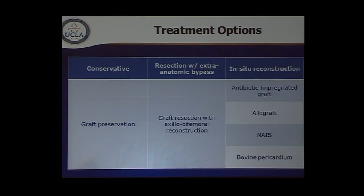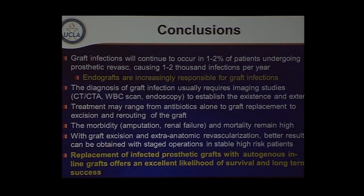In summary, our options are to preserve the graft with a conservative approach, to use an extra-anatomic bypass as the gold standard, or to do in-situ reconstruction. Our impression is that replacement of infected prosthetic grafts with autogenous in-line cryopreserved aortoiliac grafts is probably the best option for the majority of patients, associated with the highest long-term survival and cure of graft infection.